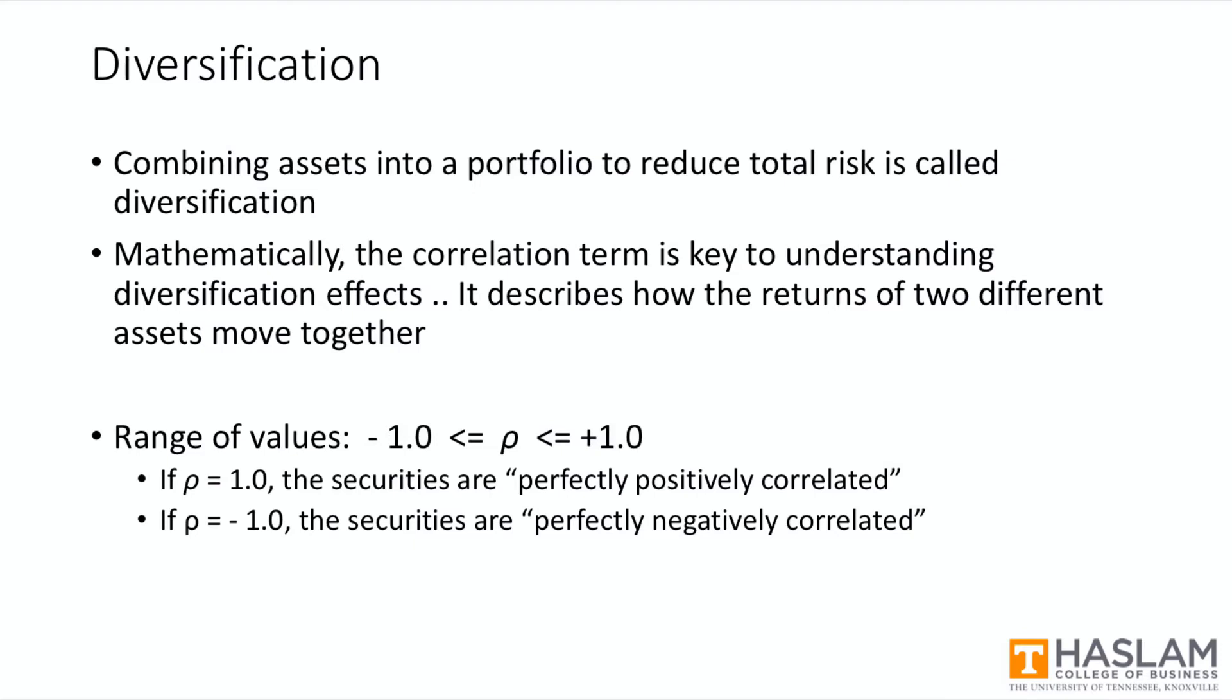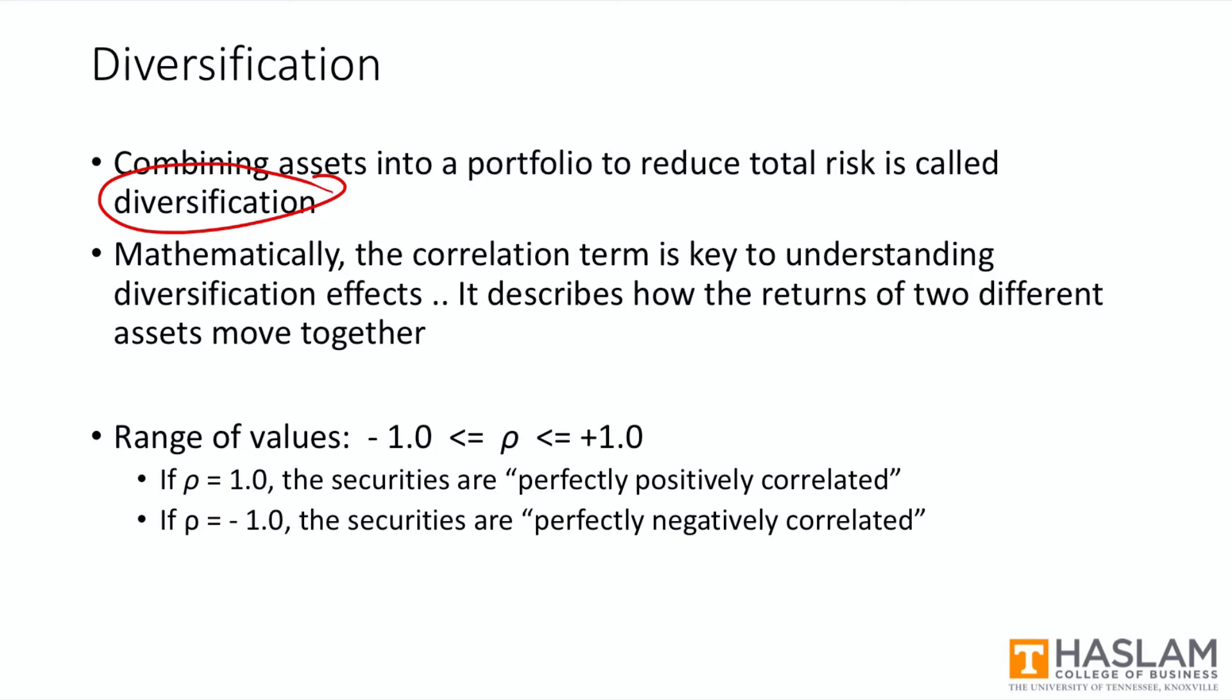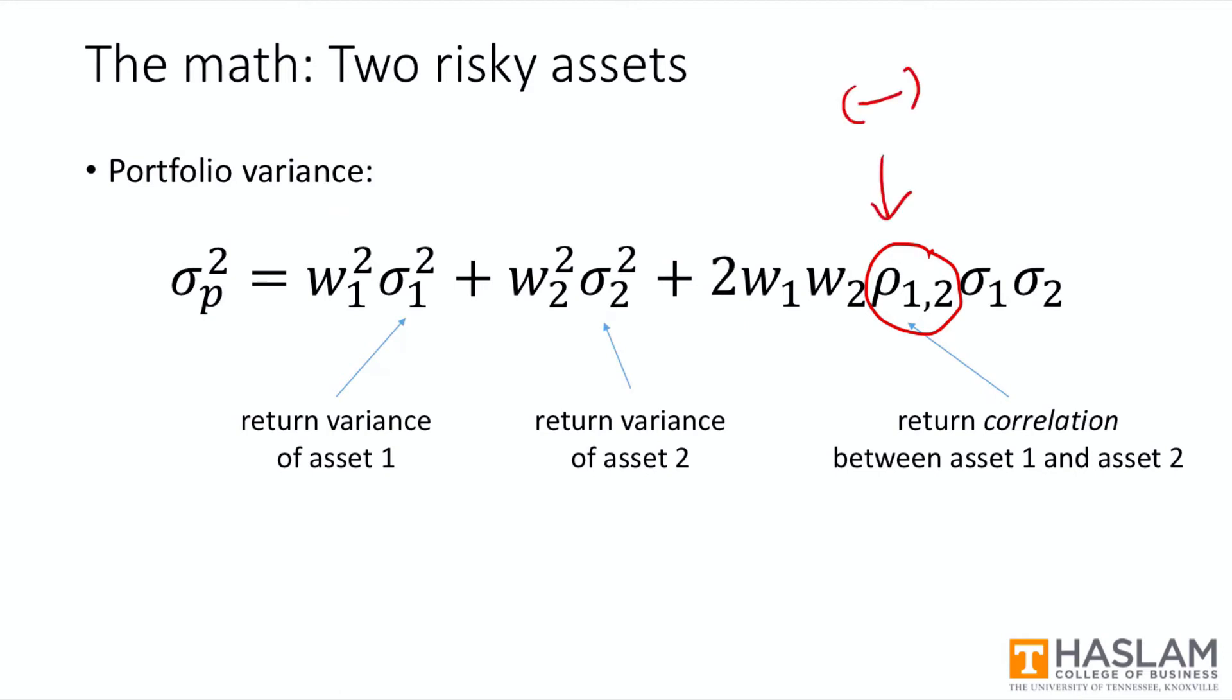You should already realize that combining assets into a portfolio can reduce total risk. This is called diversification. Now mathematically, it's the correlation term in this equation that we just discussed that tells us how strong the diversification effect will be. Correlation can be between negative one and positive one. And if it's on the low end of this range, then there will be great diversification benefits. To see this, go back to the equation and just insert some negative value here. So if you have a negative correlation, you'll see that this last big term actually drives down total portfolio variance and risk is reduced.